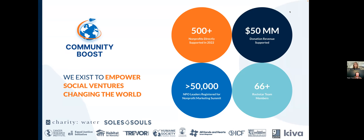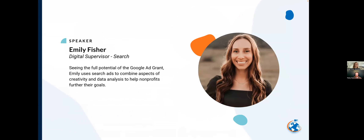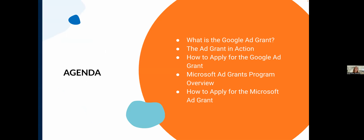Emily takes over, expressing excitement about the Google Ad Grant and how it's a great way for nonprofits to drive traffic and get meaningful results. The agenda covers: what is the Google Ad Grant, examples of it in action, how to apply, and then Reagan will cover the Microsoft program — which is currently on pause but still important to understand for when it reopens.